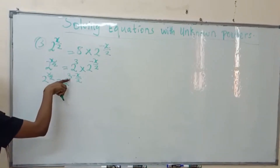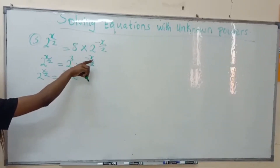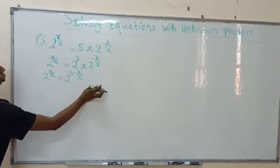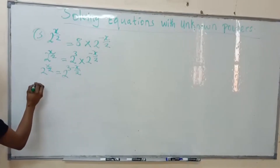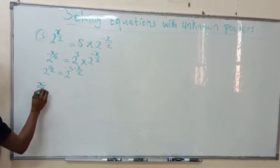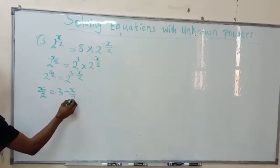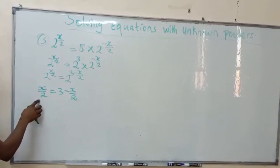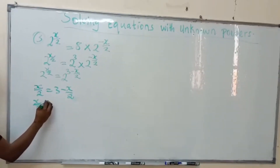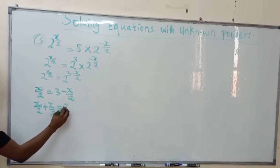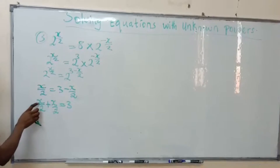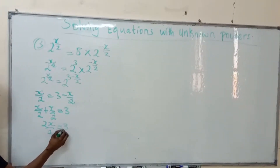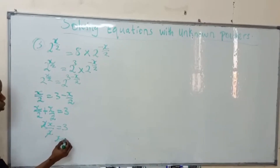We have 3 minus x over 2, because adding their powers with the minus gives minus. Now equating their powers: x over 2 equals 3 minus x over 2. Bringing x terms to the left side, minus x over 2 becomes plus x over 2. So x over 2 plus x over 2 equals 3. Adding the numerators: 2x over 2 equals 3, the 2s cancel, so x equals 3.